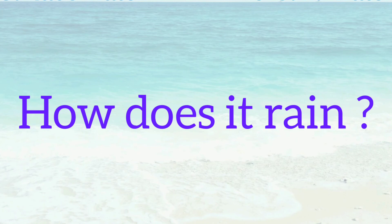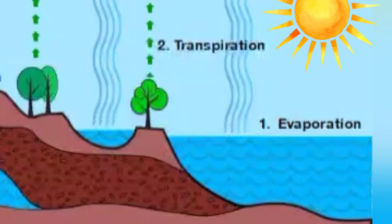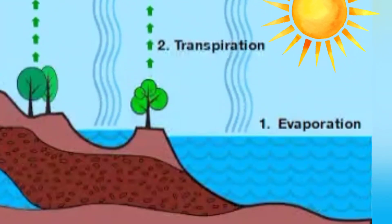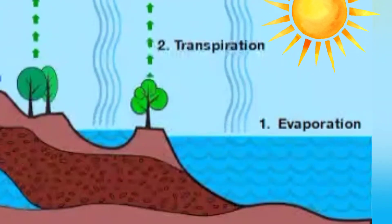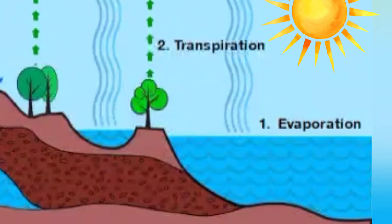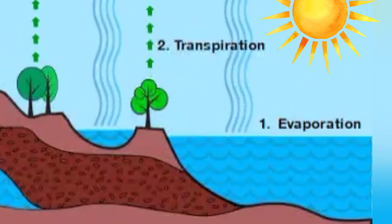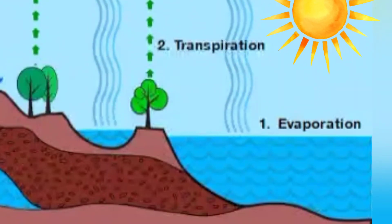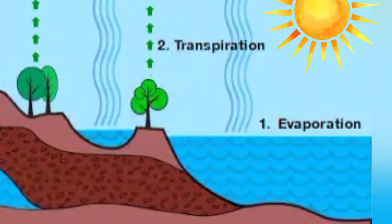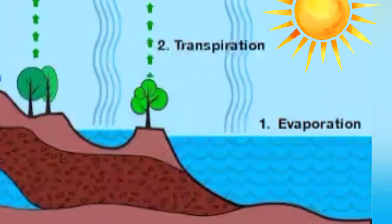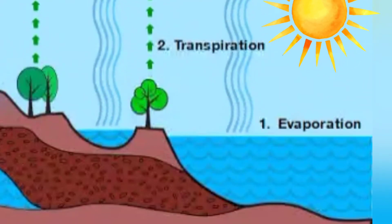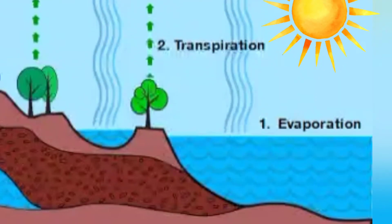Now let's see the last topic: how does it rain? Look at the picture of the water cycle. The sun's rays heat up the surface of the earth, so the temperature of water rises and the water on the earth evaporates continuously. Water in the soil also evaporates due to heat and enters the atmosphere. As water vapor is lighter than air, it rises high up into the atmosphere — this is called transpiration.